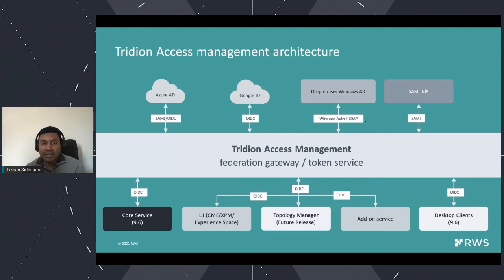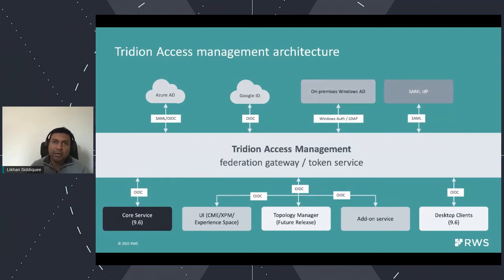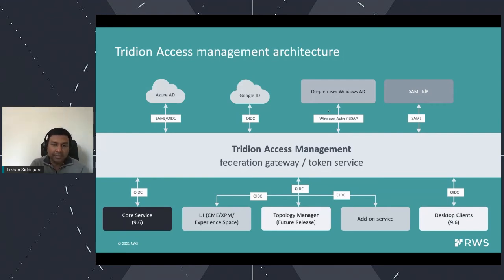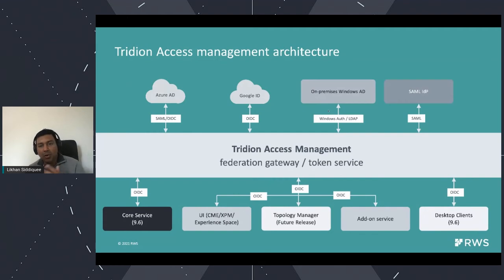Once Access Management gets that identity token, it transforms it into an OpenID token and hands it back to our individual applications and services. This allows us — say three years down the line — if we have a new authentication protocol, we only have to add it to Access Management, not to all individual services. That not only reduces our cost of implementation, but also reduces the cost of adoption. Right now, if you configure LDAP, it has to be configured across all services, propagating changes everywhere.